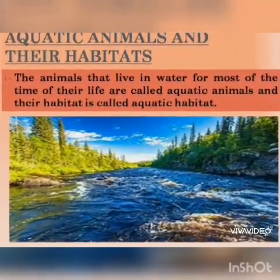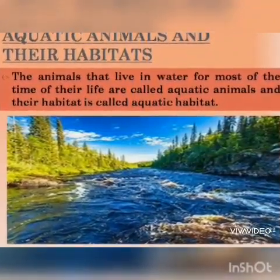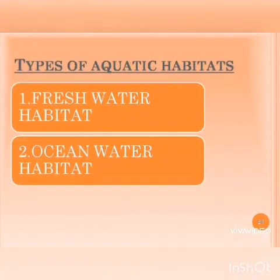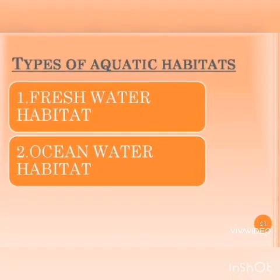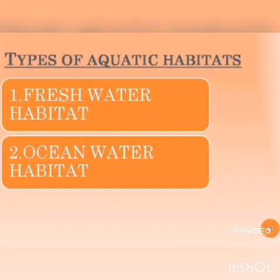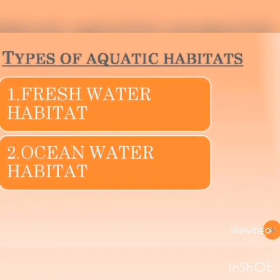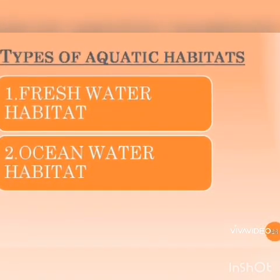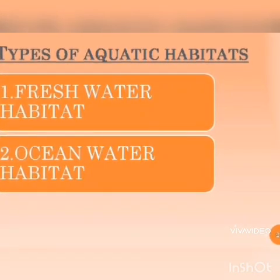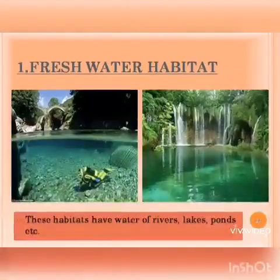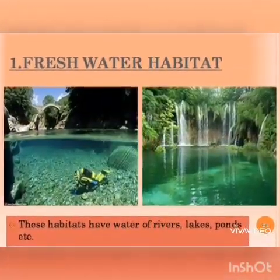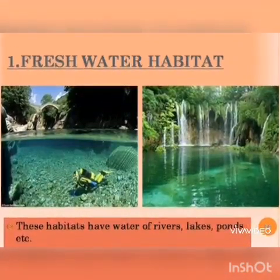Now we will talk about aquatic animals and their habitats. The animals that live in water for most of their life are called aquatic animals and their habitats are called aquatic habitats. Aquatic habitats are further divided into two parts: first is freshwater habitat and second is ocean water habitat.